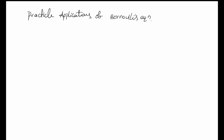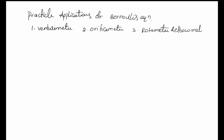The measuring devices that use Bernoulli's principle are: the venturi meter, the orifice meter, the rotameter, the elbow meter, and a fourth type. All these measuring devices work on Bernoulli's principle only. We will see them one by one, and in today's class we will cover the full description of the venturi meter.